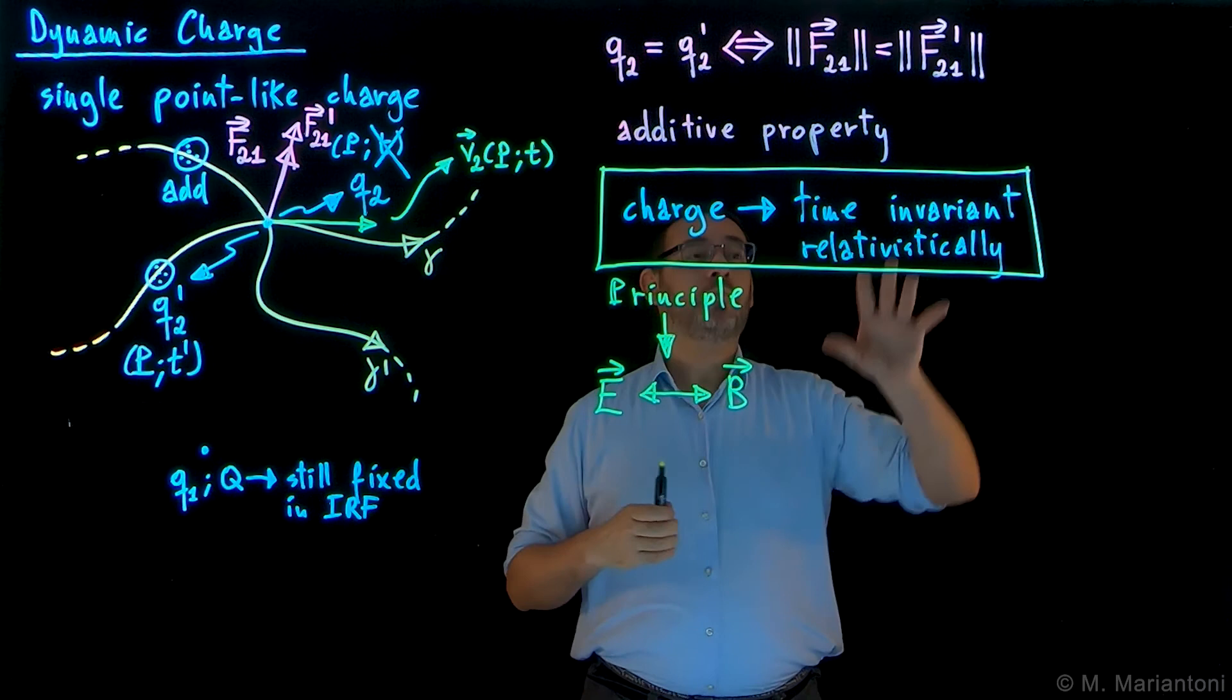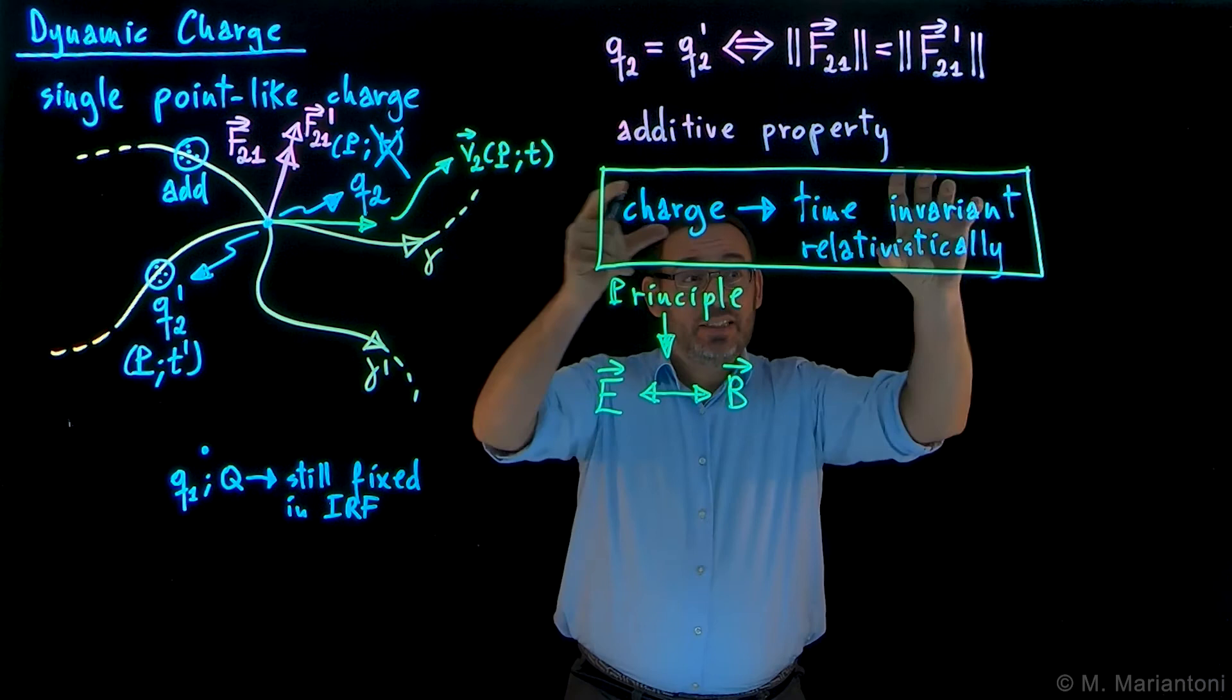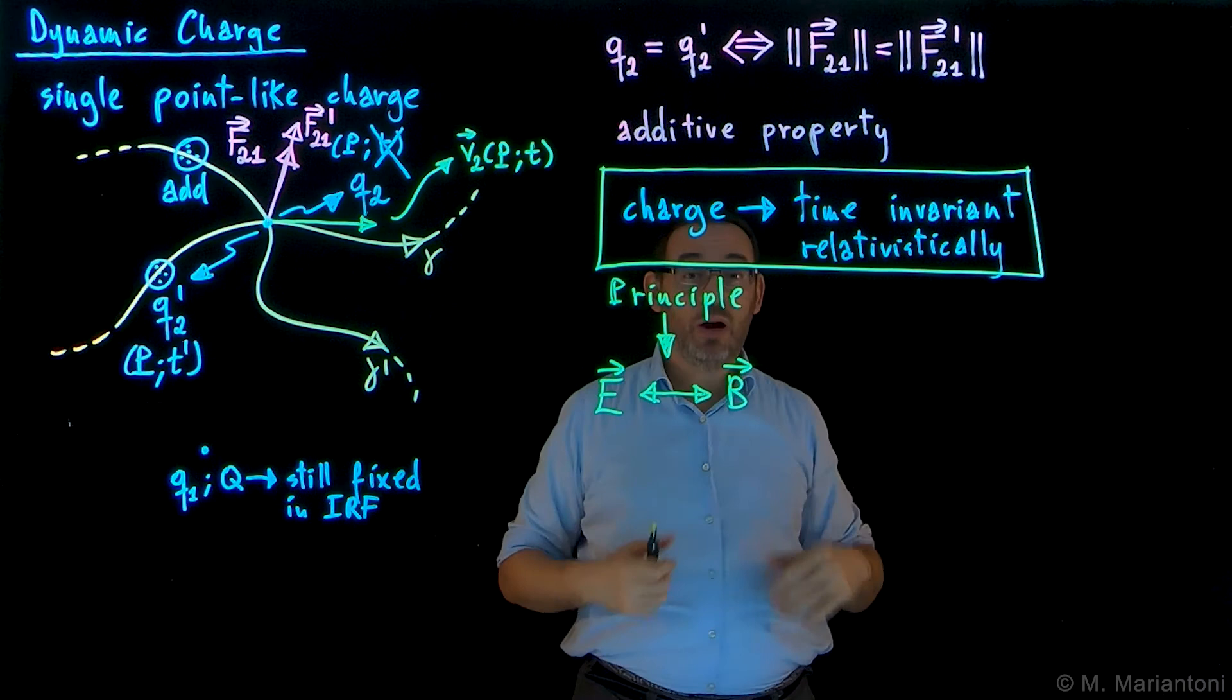So at the beginning of 342, we will show by means of a simple relativistic argument of special relativity that E and B are actually basically the same phenomenon. And this time invariance of charge is the key element to make this proof, which is quite beautiful. It really shows that basically we are studying the same phenomenon - that's why it's called the electromagnetic phenomenon.